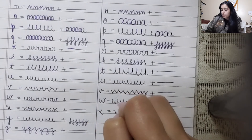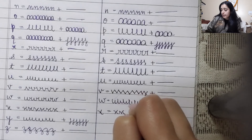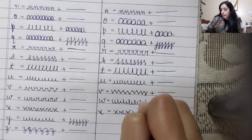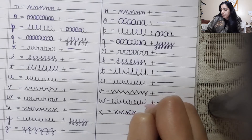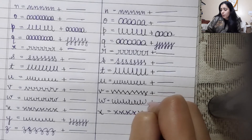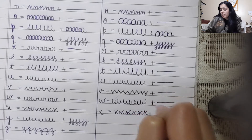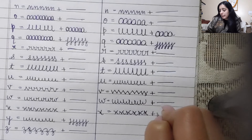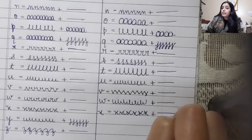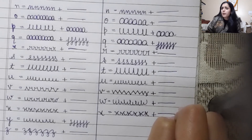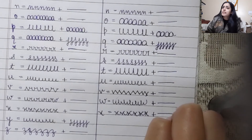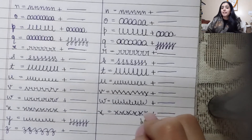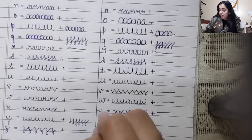For X, just make X. I am having fun — are you guys having fun? Let me know in the comments. Coming on to alphabet Y.